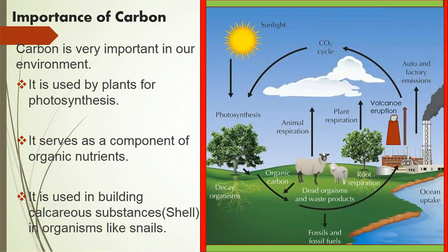Importance of carbon: Carbon is very important in our environment. 1. It is used by plants for photosynthesis. 2. It serves as a component of organic nutrients. 3. It is used in building structural substances like shells in organisms like snails. This is an image showing the carbon circle. Remember, photosynthesis removes carbon dioxide from the atmosphere, while respiration in both plants and animals adds carbon dioxide into the atmosphere.